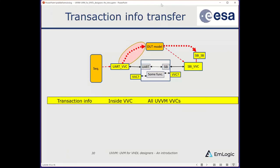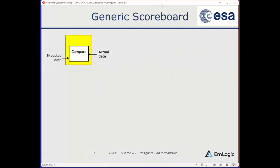Transaction info: when the testbench sequencer writes a command to the UART verification component, which then sends data into the device under test, transaction info allows external components — such as a device-under-test model — to access the transaction data from inside the UART verification component. That means the DUT model can know exactly what's happening on the UART interface and generate the expected output accordingly. The generic scoreboard accepts expected data and actual data, compares them, and generates statistics. It's a generic data type supporting any kind of data. You can insert, delete, fetch as a queue, ignore initial mismatches, provide optional source elements for debugging, and it counts entered, pending, matched, and mismatched data.